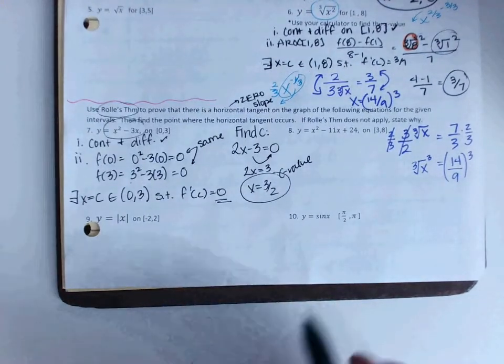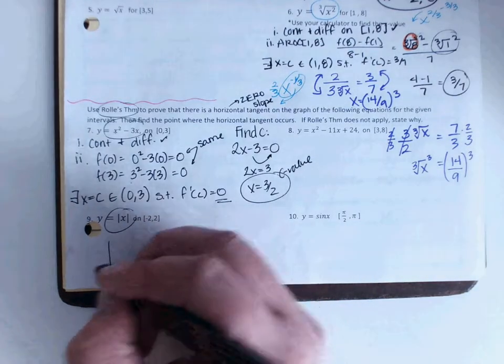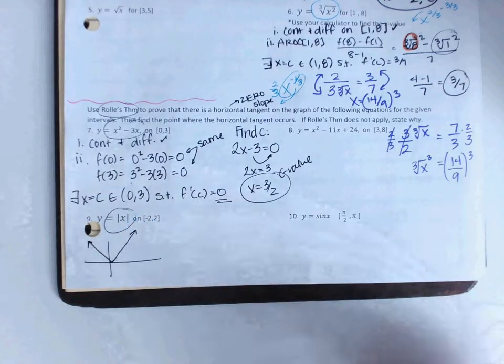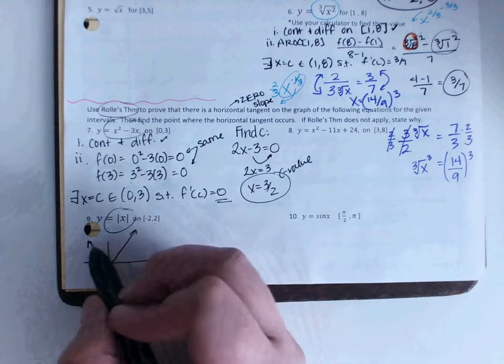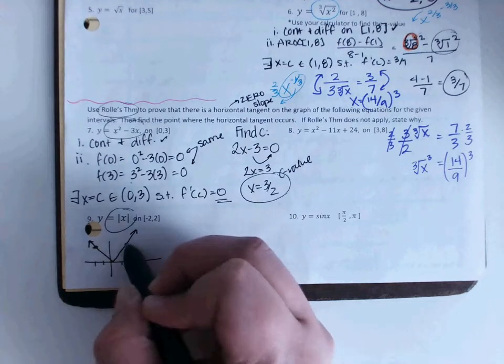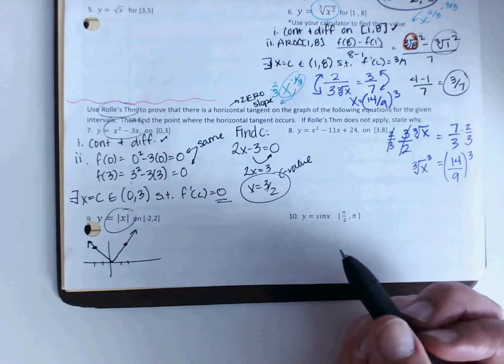Other two I want to look at are 9 and 10. Number 9, think about the graph of y equals absolute value x. We looked at that graph in class today. That's the shape of a v. So if I'm looking from negative 2 to 2, from here to here, my y values are the same height. But remember, my function first has to be continuously and differentiable.